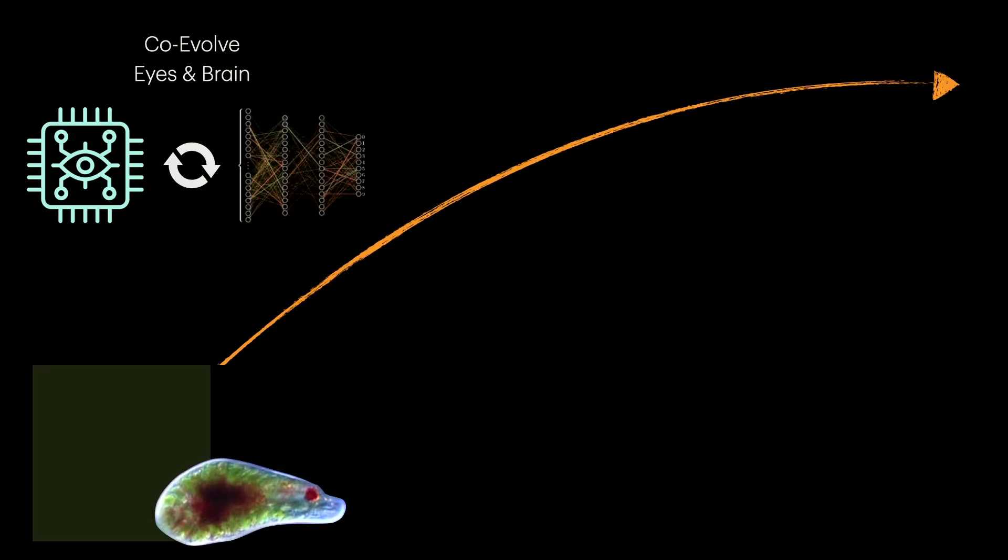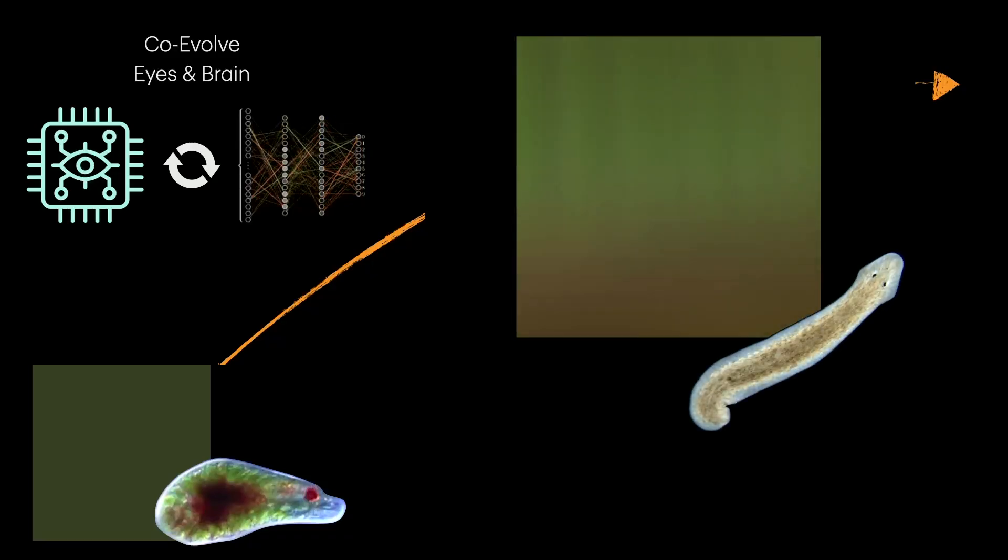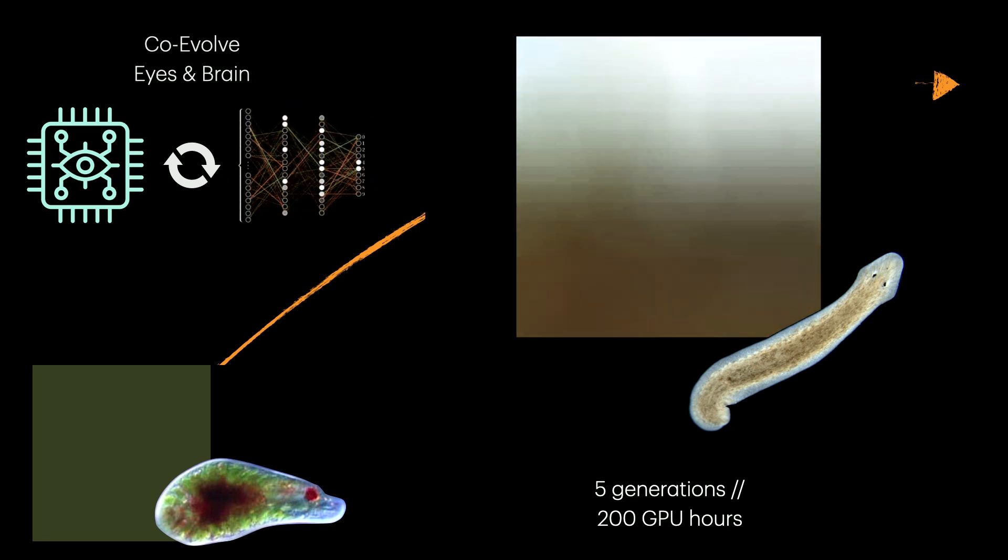Now what we're going to do is co-evolve its eyes and brains, kind of like how evolution did it. After five generations of evolution, the building blocks get stacked together in very interesting ways. We can see more information here. This agent can see where the sky is and where the ground is. This is actually what a worm sees.